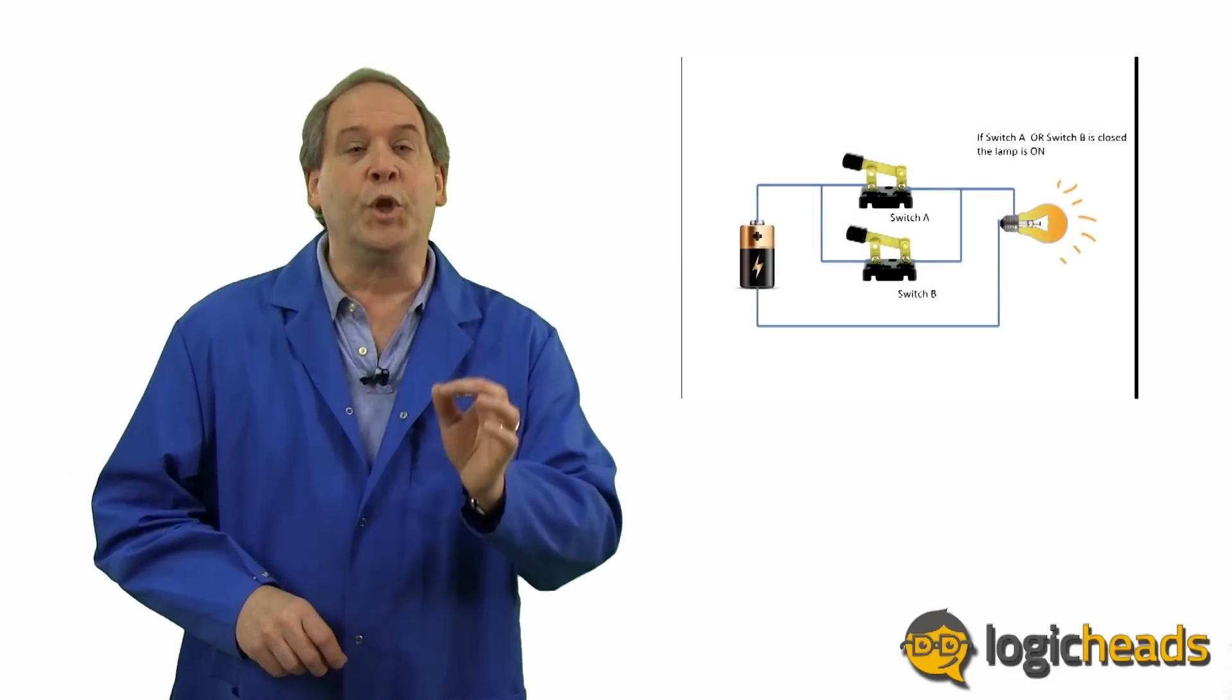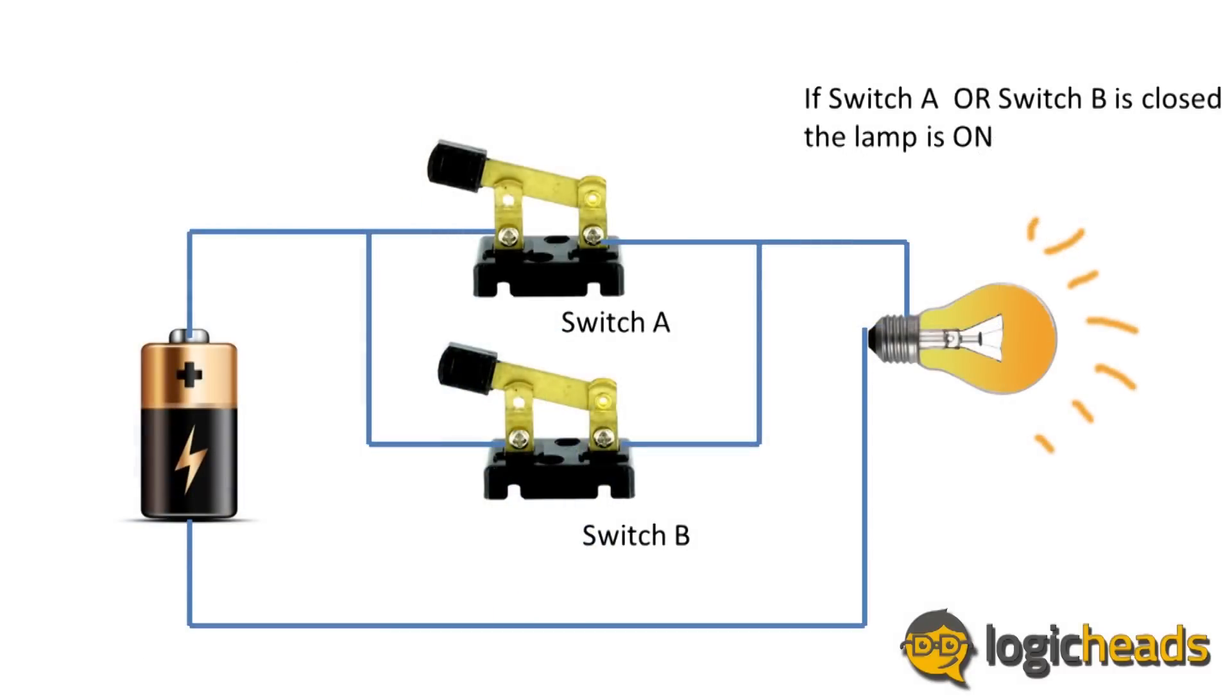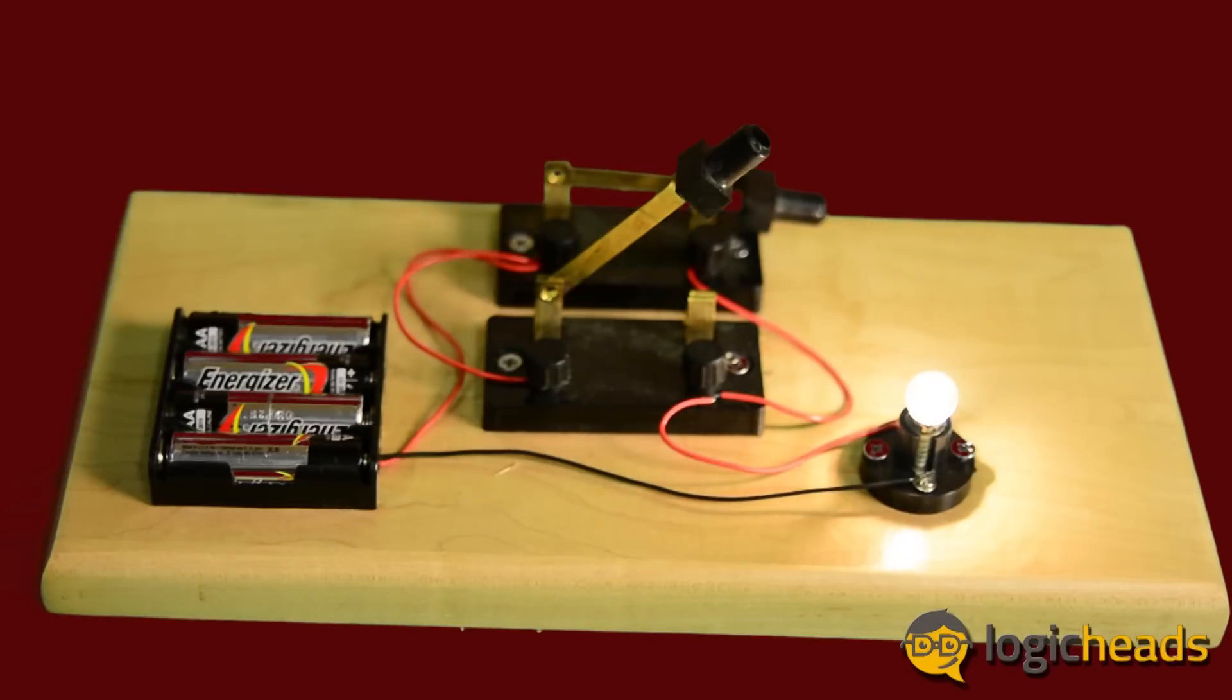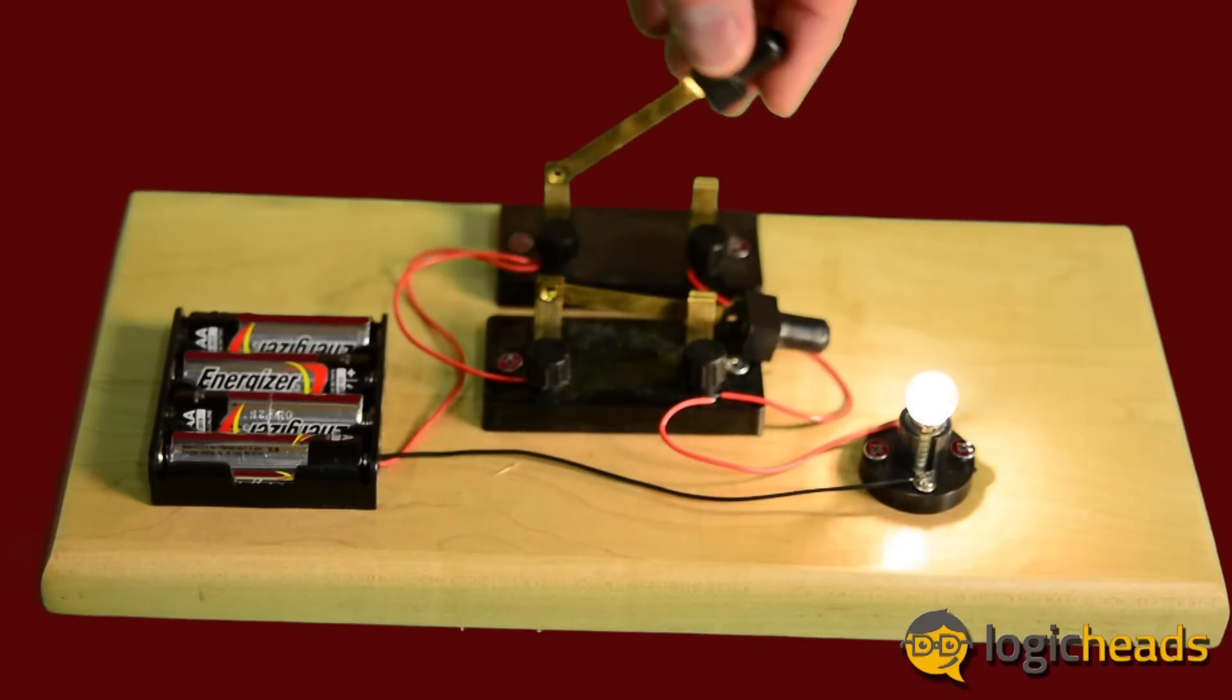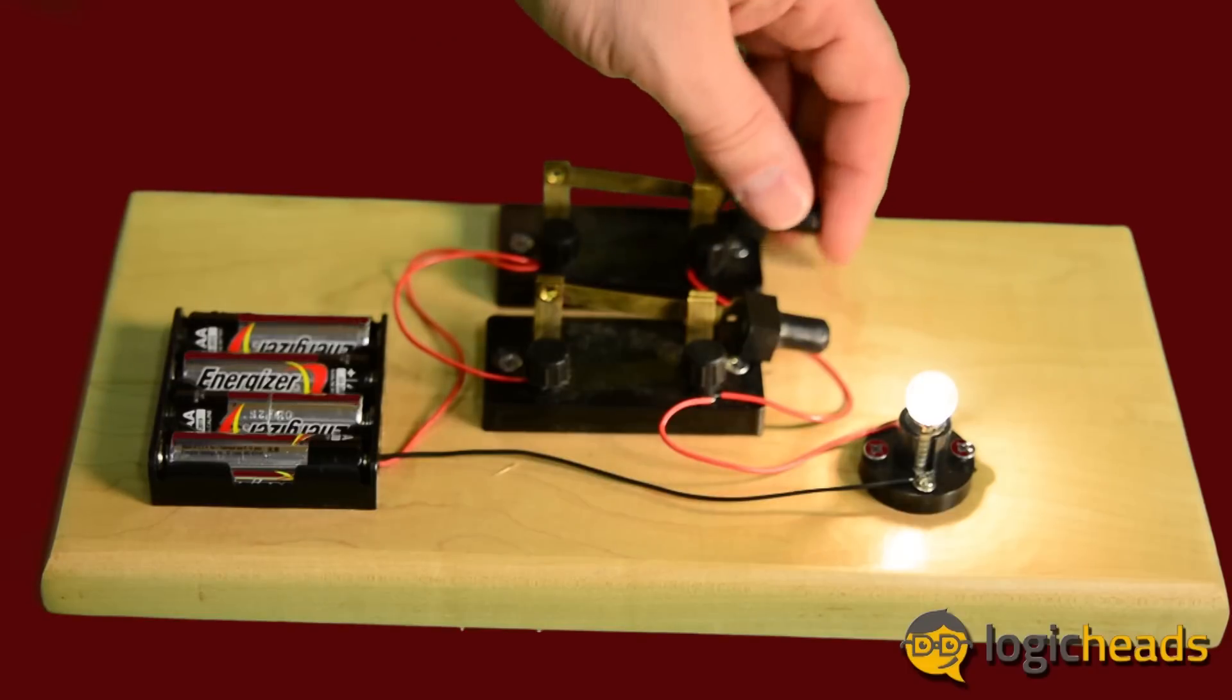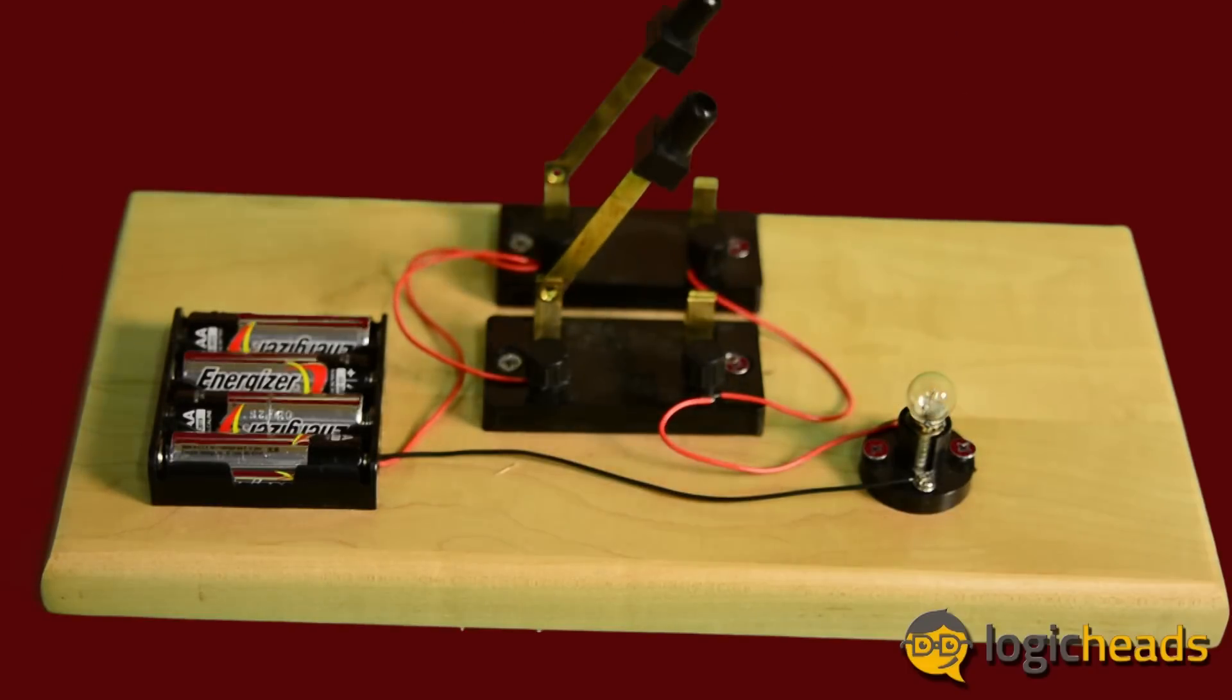Now here's the second one. You probably called it the parallel circuit, but see what it actually implements. If A or B switches, or both, are closed, the light bulb is lit. Only if both switches are open is the light bulb off. It is a logical OR.